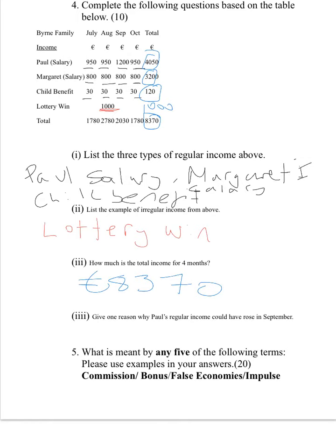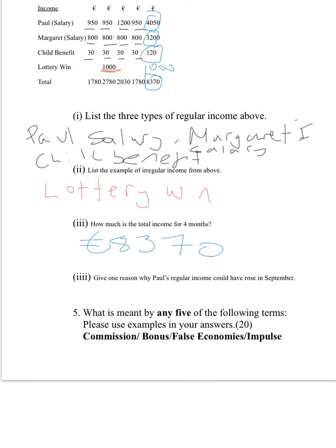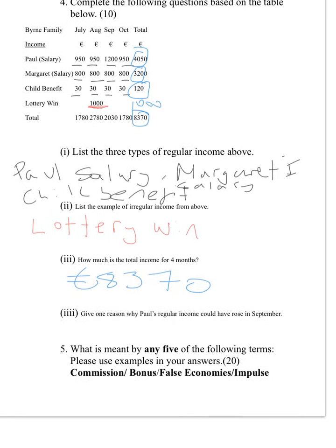The last part asks you to give one reason why Paul's income could have risen in September. One reason could be overtime — maybe he worked extra hours in September. Or perhaps he received a bonus because his boss was really happy with the work he'd done. So perhaps he earned overtime, or maybe he hit a target and received a bonus, or even commission.